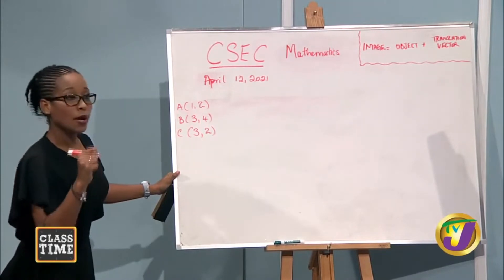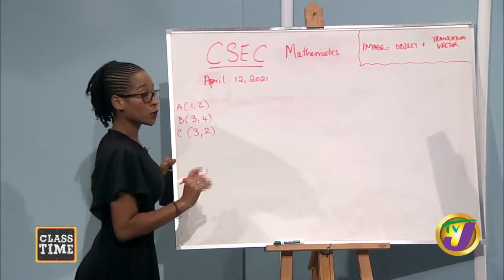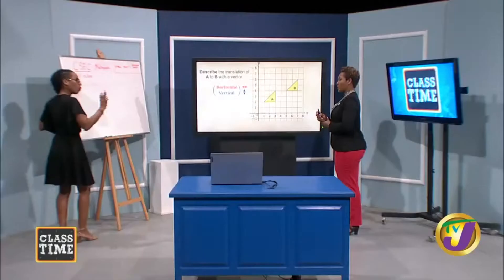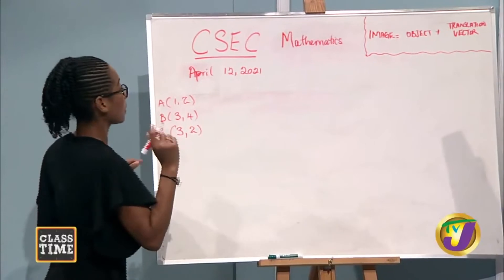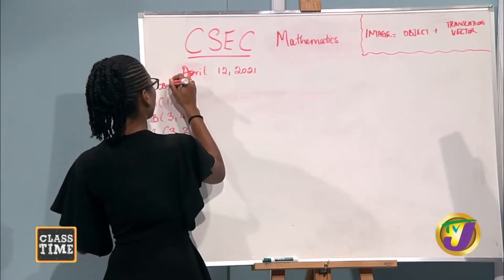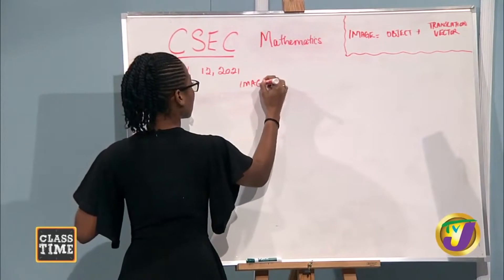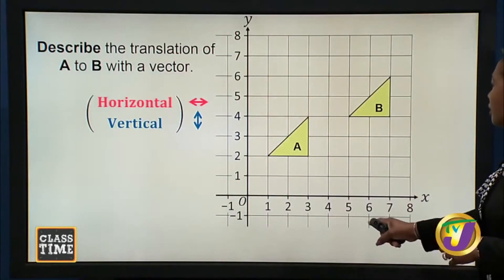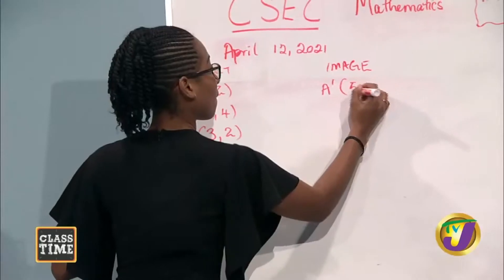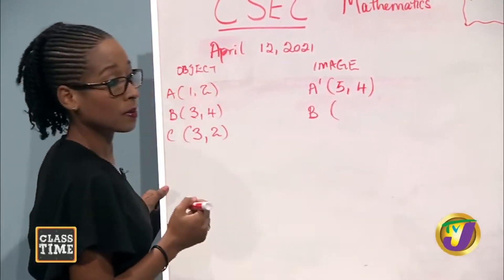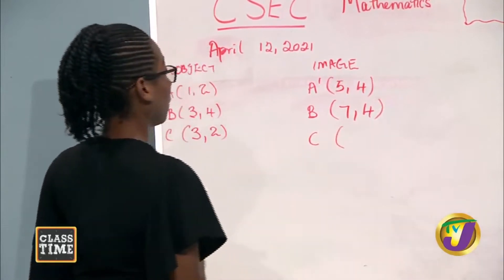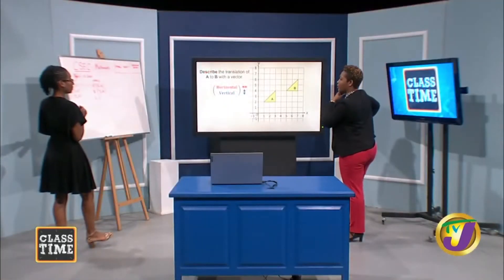Tell me the points of our image now. So we have A prime — a new term. A prime means it's the image point corresponding to A. A prime is 5, 4. B prime would be 7, 6. And C prime would be 7, 4.